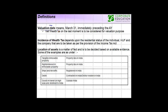Valuation date means March 31 immediately preceding the assessment year. So if the assessment year is 2011-2012, that will commence from 1st April 2011, and therefore March 31 immediately preceding the assessment year will be March 31 of 2011. That is to be considered as the valuation date — the March 31 immediately preceding the assessment year. Net wealth as on the last moment is to be considered for valuation purposes.